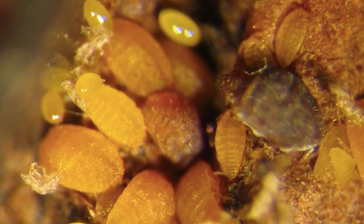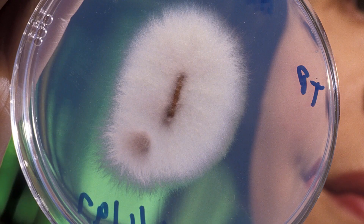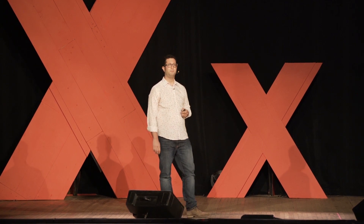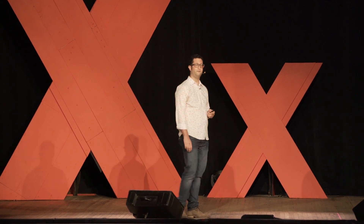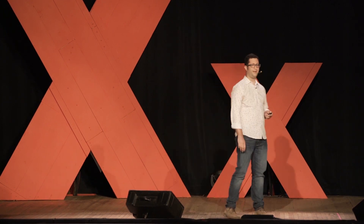Now, the culprit might be an insect, or a fungus, or a bacterium. But regardless, if the disease is severe enough, the plant will die. And this can be devastating, because stress on plant populations can spell disaster for human ones.